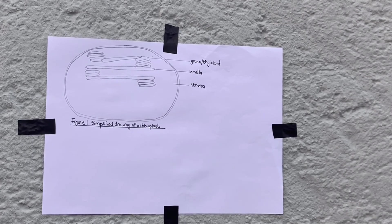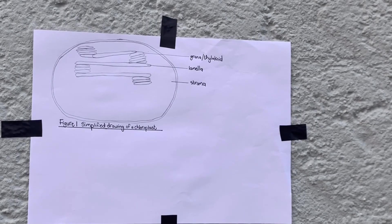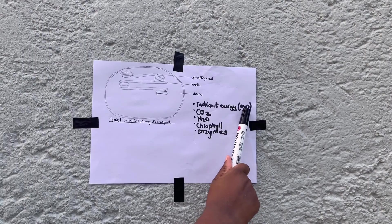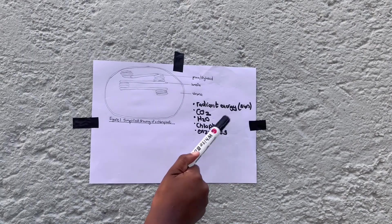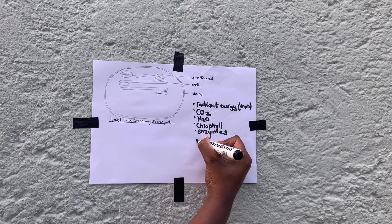Now, what is photosynthesis? You've probably heard of it before in earlier grades. Photosynthesis is basically the conversion of light or radiant energy into chemical energy, which is starch. In simplified terms, it is the process of turning light energy into glucose, which is food for the plant and food for us. The requirements of photosynthesis are: radiant energy from the sun, carbon dioxide, water, chlorophyll, and enzymes — and all of that results in glucose and oxygen.